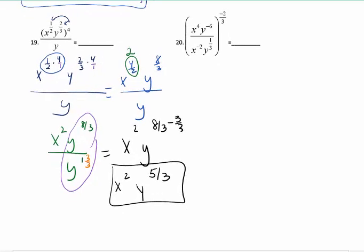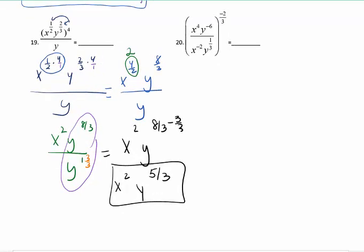Notice, I used my rules for order of operations. I did my exponents first, got rid of the parentheses. Then, after I did that, I looked to see if I could collect any like bases together, so that I could simplify that problem. And double-check positive exponents only.